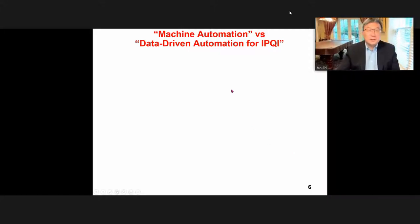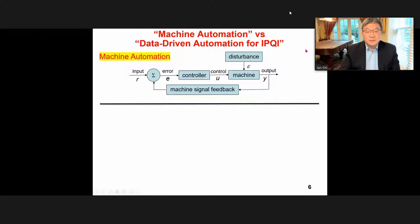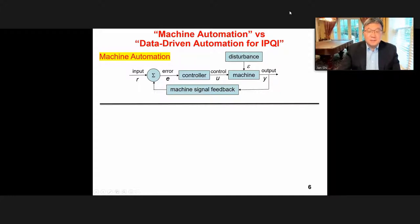Is there a difference between conventional machine automation from mechanical, electrical, or aerospace engineering and data-driven automation for IPQI? For a given machine automation system, a machine with disturbances is controlled by a controller based on the machine's output or performance. We feed back and compensate compared with the desired input. This kind of control can achieve the best force, temperature, speed, and so on. That is machine automation.